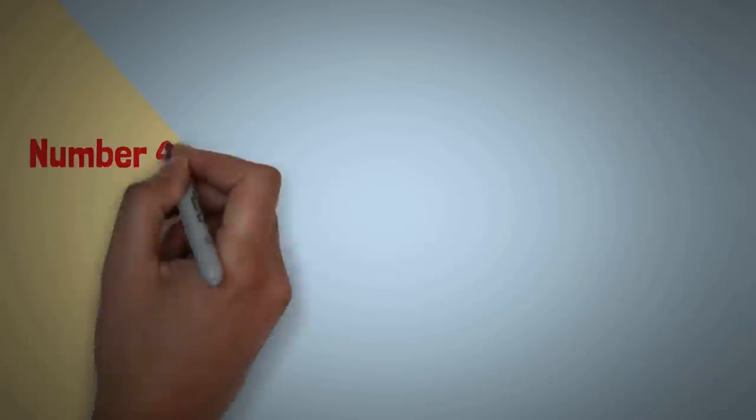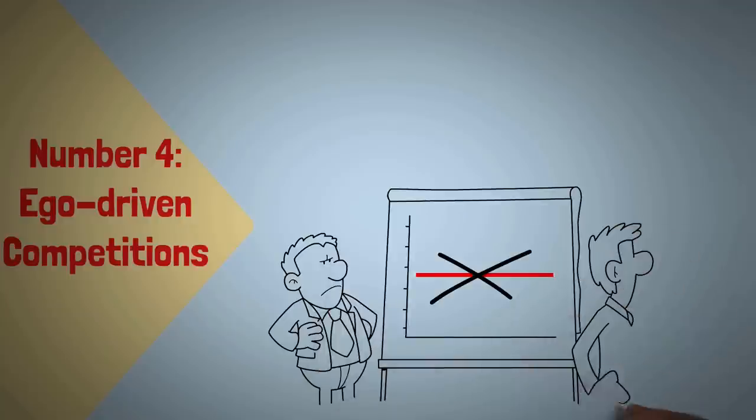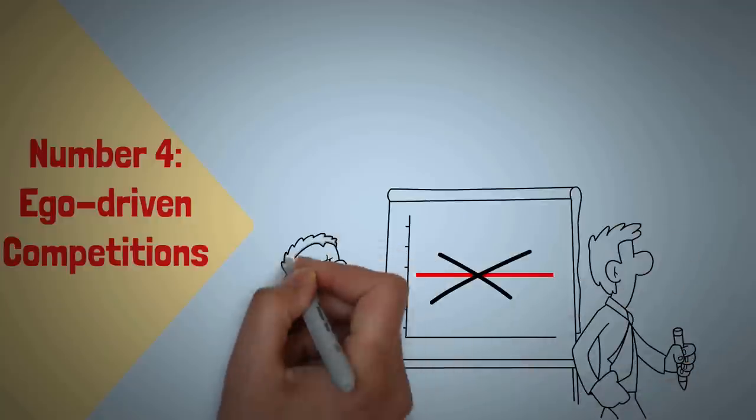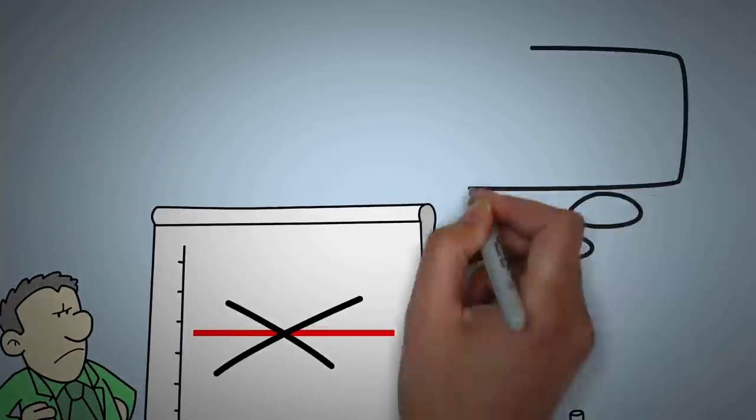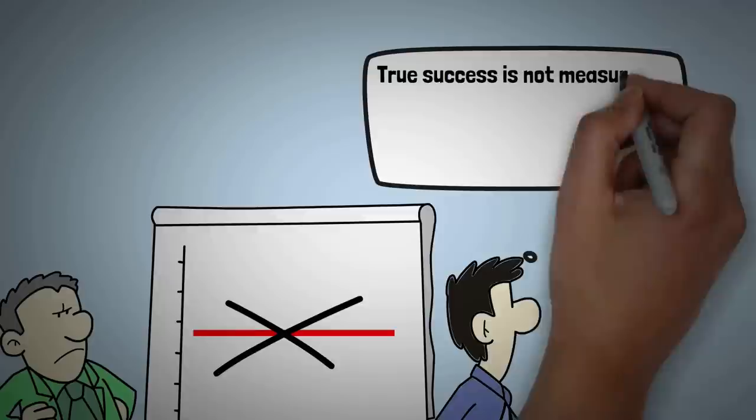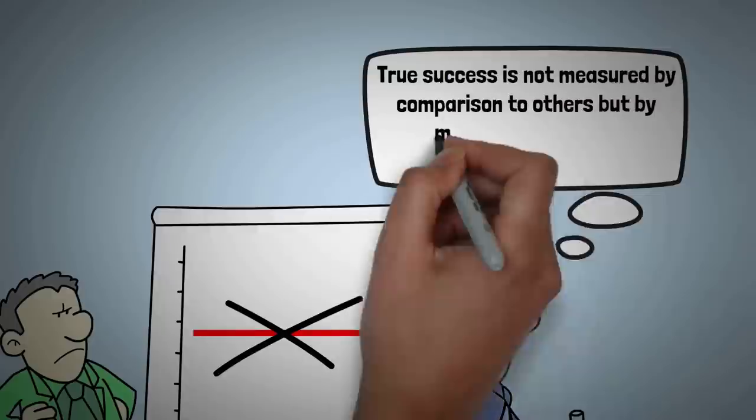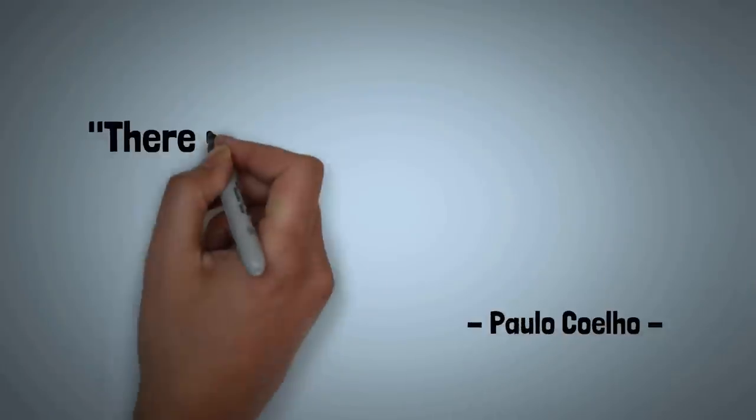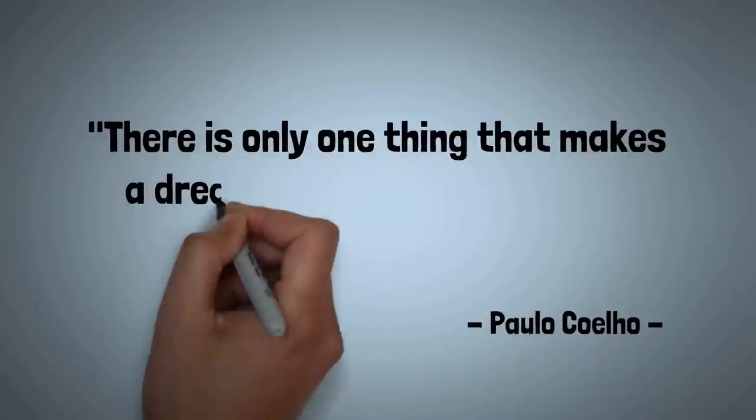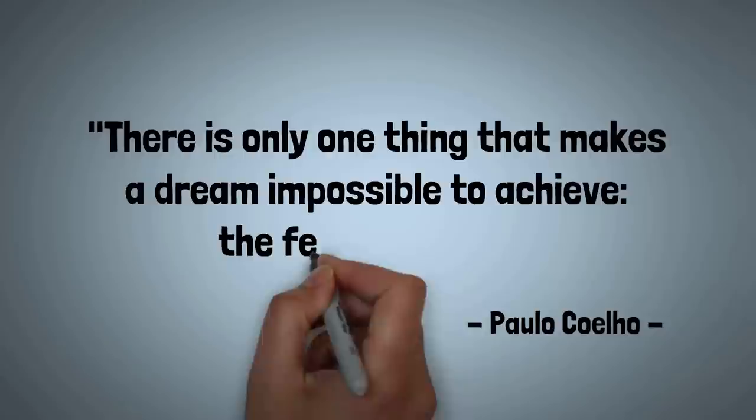Number 4: Ego-Driven Competitions. With wisdom, Sigma males step away from ego battles, acknowledging the negative impact and restrictions that arise from a constant need to prove superiority. They understand that true success is not measured by comparison to others, but by their personal growth and self-improvement. In the words of author Paolo Coelho, there is only one thing that makes a dream impossible to achieve: the fear of failure.